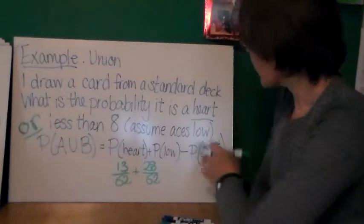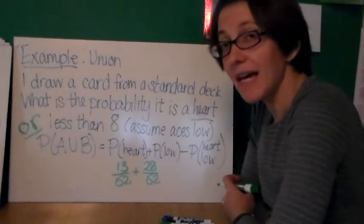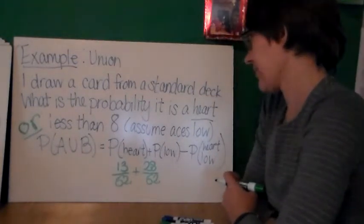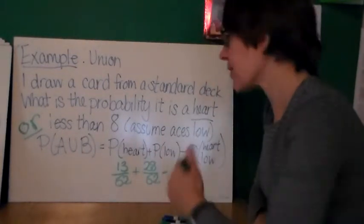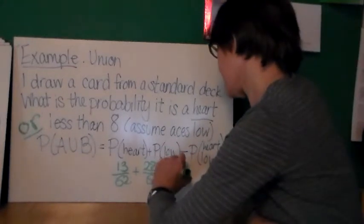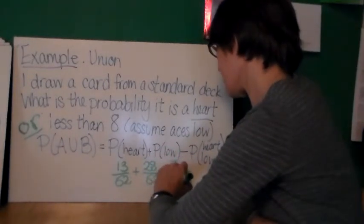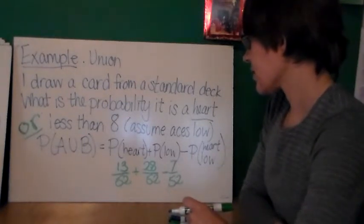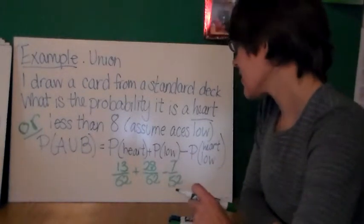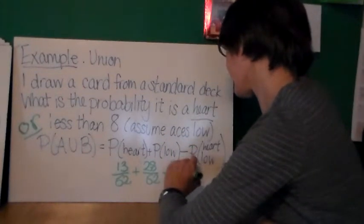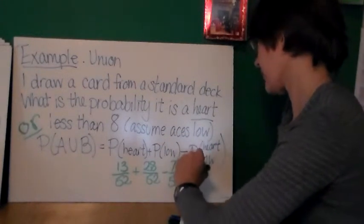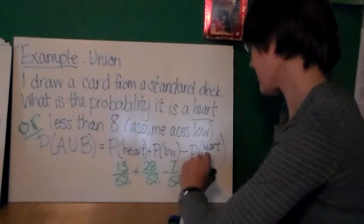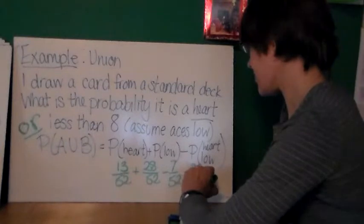Now, out of those, I have 7 cards that are both hearts and low. So I'm going to subtract those because otherwise I double count them. So 7 out of 52. So I'm just going to add my fractions. And I get 13 plus 28 minus 7 is 34.